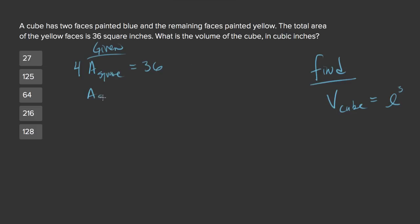So we can calculate that the area of one square face equals 36 over 4, which is 9. Right, you get that by dividing both sides by 4.